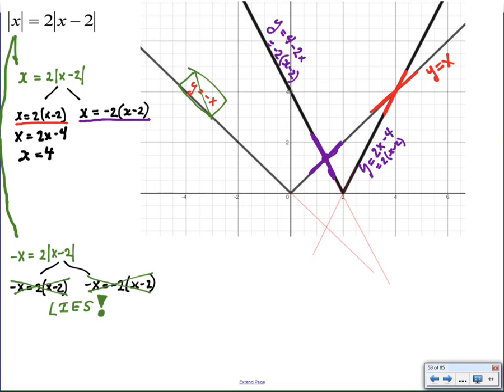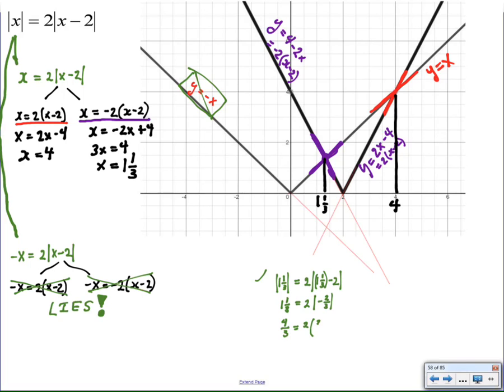So the rest is algebra. Solve the first one. First distribute the two, and then apply inverses to get x equals four. Here we distribute the negative two, and apply inverses to get x equals one and one third. Completely corresponds to my graph, and I can check with arithmetic just to be safe.